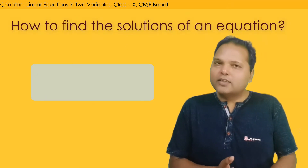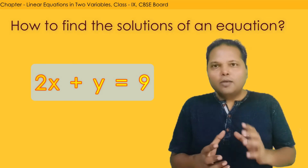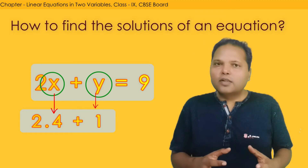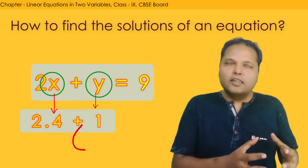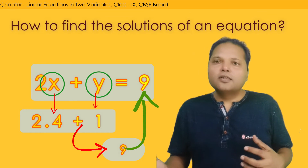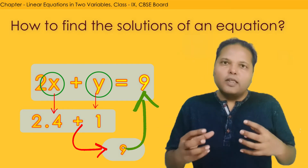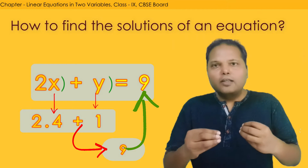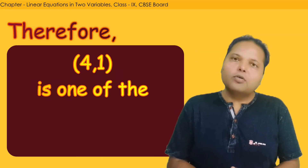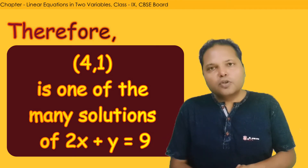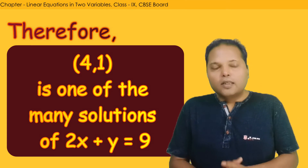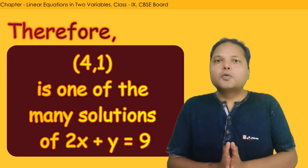The example is 2x plus y is equal to 9. Now, if we keep x's value to 4 and y's value to 1, then the left side of the linear equation is equal to 9, which is also equal to the right side. So when we keep x's and y's values to 4 and 1, the left side equals the right side, which means 4,1 is one of the many possible solutions of this linear equation. In this way, there are infinite solutions of any linear equation.